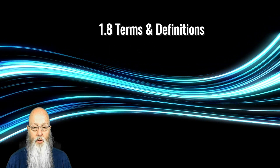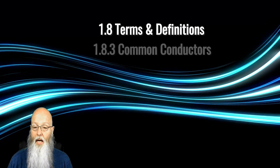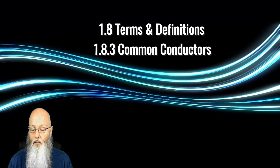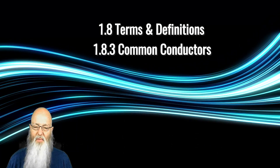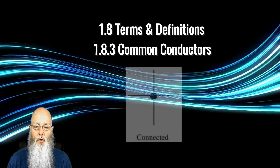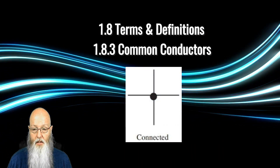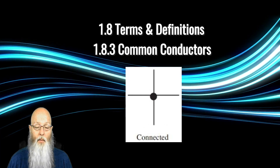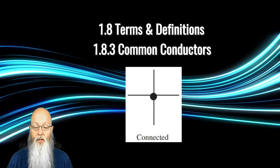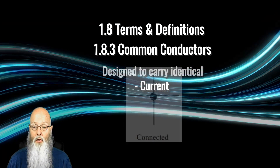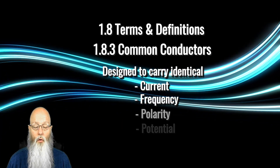Moving on to the new terms and definitions, we go to 1.8.3. The term common conductors has been added. This isn't a new term to the document, but the defining of the term is new in this revision. Common conductors are electrical conductors designed to carry an identical current, frequency, polarity, or potential.